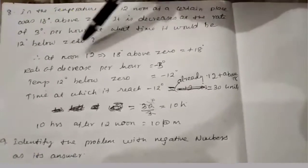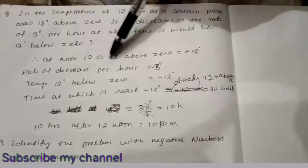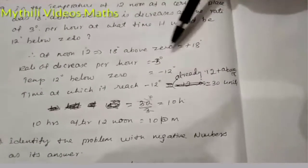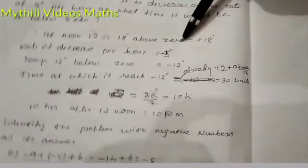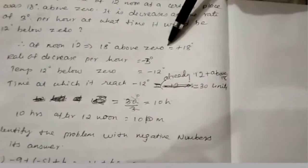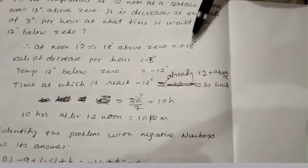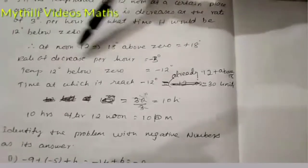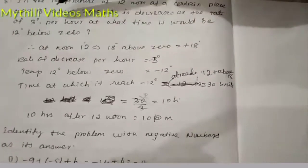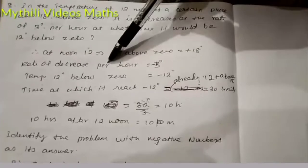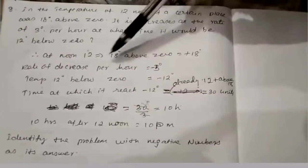see the solution. At noon, which is 12 o'clock, the temperature is 18 degrees above zero. From our question, they've given 18 degrees above zero. Above means it is plus, so that is +18 degrees.